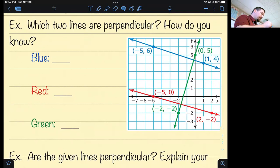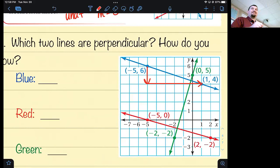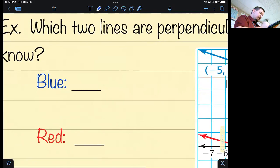For the blue line, the slope of the blue line is down 2 over 6. What's that reduced to? Dawson? Negative one third. That's negative one third. Don't forget the negative.